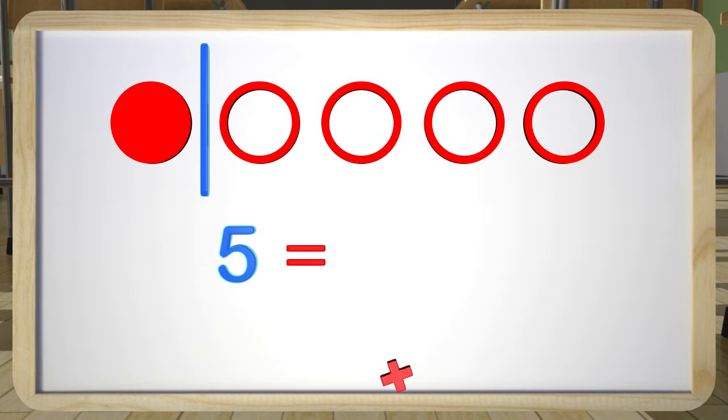The answer is five. The one colored circle added to the four blank circles gives us five circles. So the two numbers hiding in the number five was one and four. Awesome job guys, there really are numbers hiding in there.